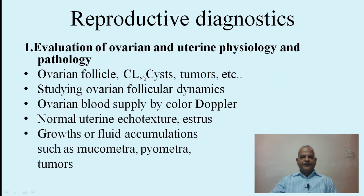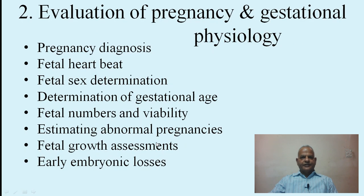In reproductive diagnostics of domestic animals, we have three main areas: evaluation of ovarian and uterine physiology and pathology — including ovarian follicles, the corpus luteum, cysts, and tumors; studying ovarian follicular dynamics; ovarian blood supply by color Doppler; normal uterine echotexture visible during estrus; and uterine growth or fluid accumulation such as mucometra, pyometra, and tumors.